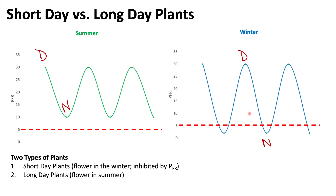Short day plants are able to produce flowers in winter because the longer nights give phytochrome far red enough time to degenerate back into phytochrome red. We can see on the graph that Pfr drops below the threshold point, meaning there is no longer an accumulation of Pfr to inhibit the short day plants, and therefore they will produce flowers in winter.